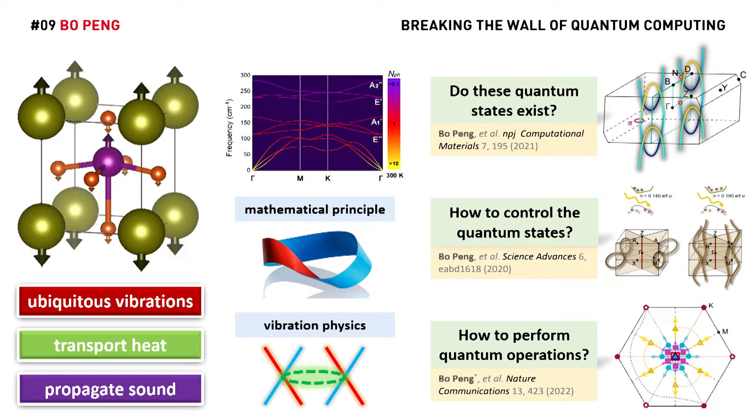The second piece of my work is: can we control these quantum states? And I find that we can control these quantum states using light, in a well-known material family called oxide perovskites.